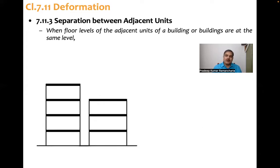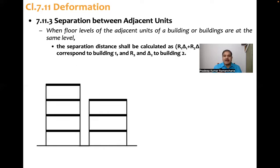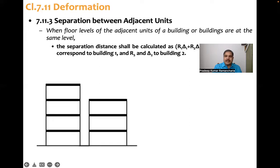So buildings like this, two buildings are there, the slab levels are, slabs are at the same level. So the separation distance between them shall be calculated using this one: R1 delta 1 plus R2 delta 2. R1 is the response reduction factor of building 1, delta 1 is the deformation of building 1, R2 is the same for building 2, and delta 2 is the deformation of building 2. So average of these two are taken into consideration.